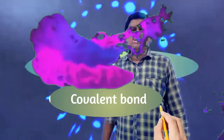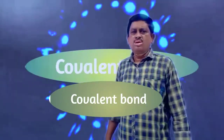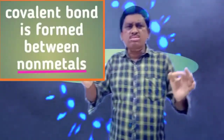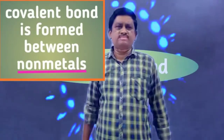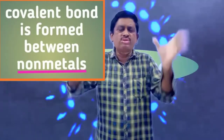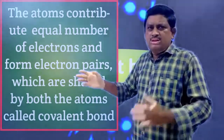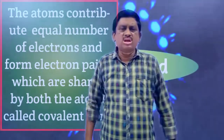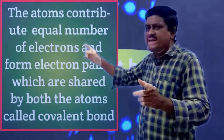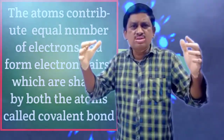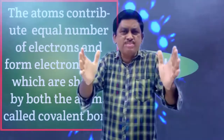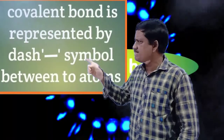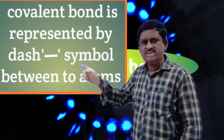Today we are going to discuss about covalent bond. Covalent bond is proposed by G.L. Lewis. Covalent bond is formed between two non-metals. Covalent bond is defined as: the atoms contributing equal number of electrons, and this contributing electron pair is shared between the two atoms. Such type of bond is called covalent bond. Covalent bond is denoted by a dash symbol in between two atoms in a molecule.